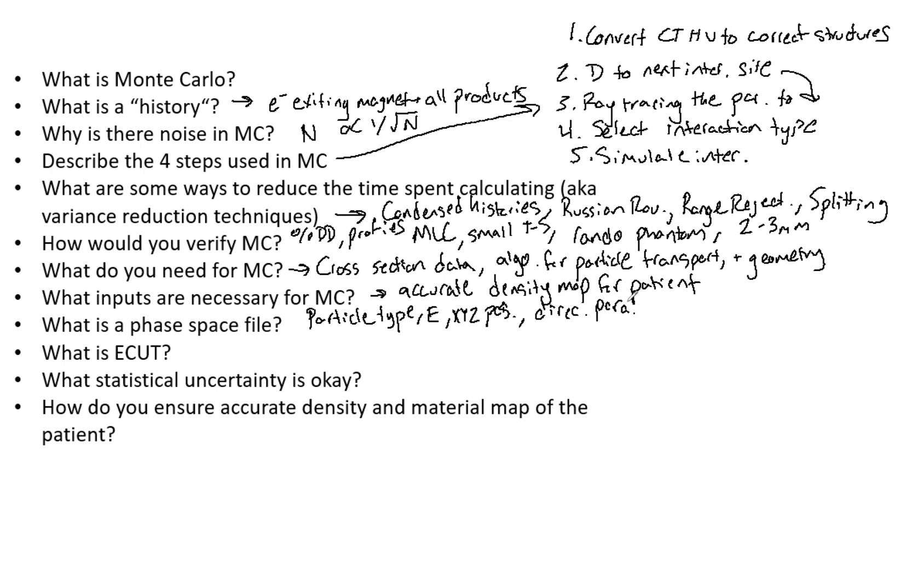That ultimately is going to help you determine what direction does the particle go. What is e-cut? Particle transport stops when the energy is less than the e-cut. This happens when particles deposit the energy in that voxel. The e-cut is approximately the same as the voxel dimension. For example, if a voxel is two millimeters, the e-cut is roughly less than 500 keV in water or less than 200 keV in lung.